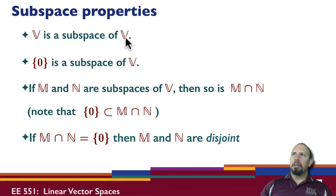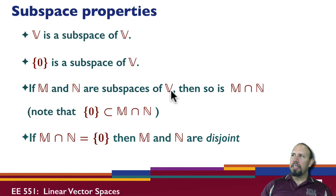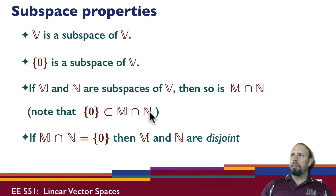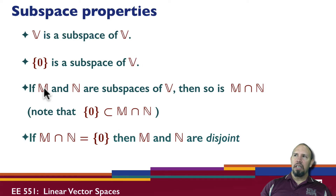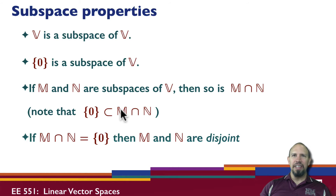Here are some subspace properties: a vector space is a subspace of itself. The zero element is a subspace of any vector space — it is a proper subspace. If you have two subspaces M and N of a vector space, their intersection is also a subspace of the vector space, and the zero element is always in that intersection. If you ever have a subspace, its complement — all elements in V not in that subspace — is not a subspace, because zero is in the subspace and therefore not in the complement.